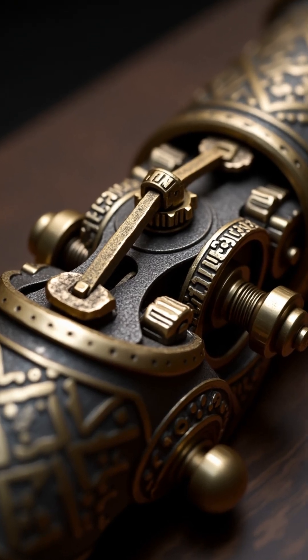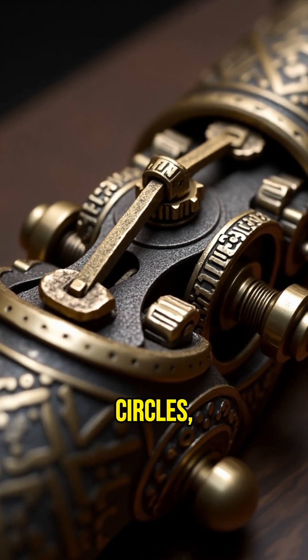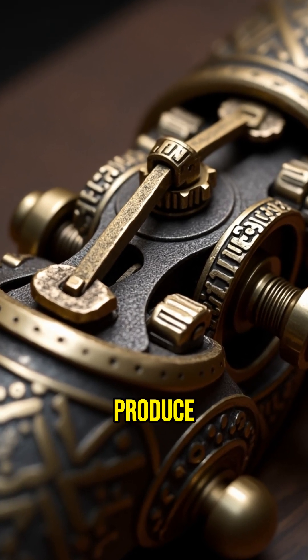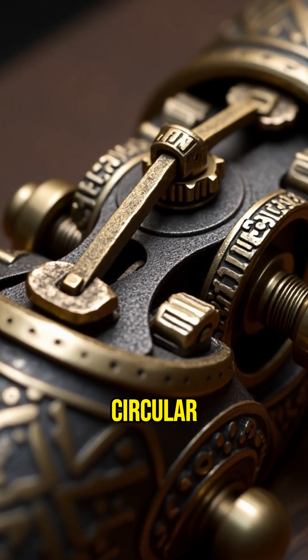Known as the Tusi couple, this device used two interlocking circles, one rolling inside the other, to produce exact linear travel from circular rotation.